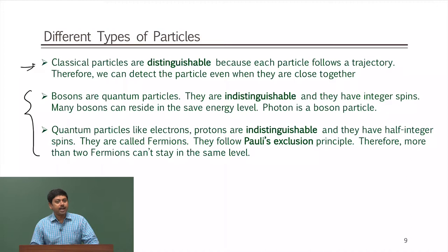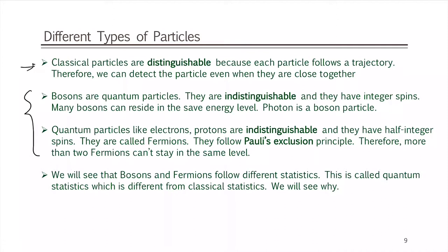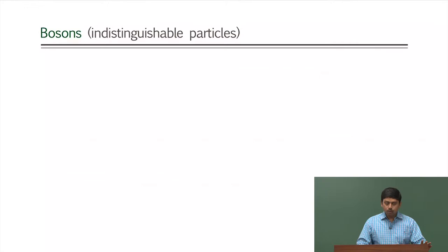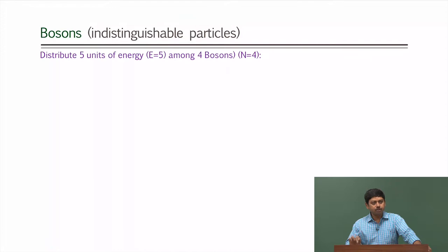So we still need to identify how to get the statistics — how to calculate W's and how to get the probability distributions of particles in different energy levels with respect to energy. Bosons and fermions will follow different statistics and this is called quantum statistics. In this course we are not going to go into the mathematical details of deriving quantum statistical formulas. All we are emphasizing is that these particles are indistinguishable. So let us talk about bosons — again 5 units of energy and 4 particles.